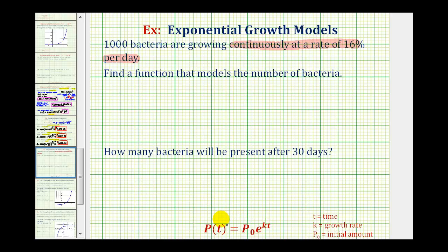Where p of t is the population or amount after time t, p sub zero is the initial amount or starting amount, k is the growth rate expressed as a decimal, and t is the time.